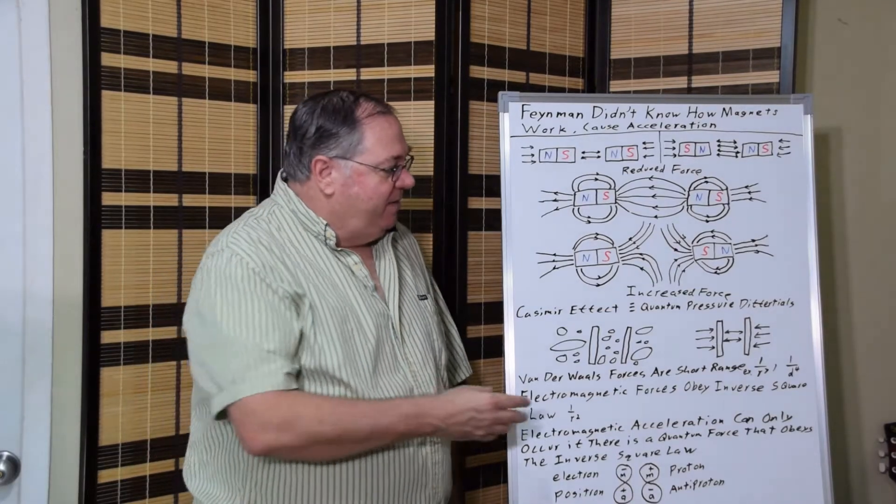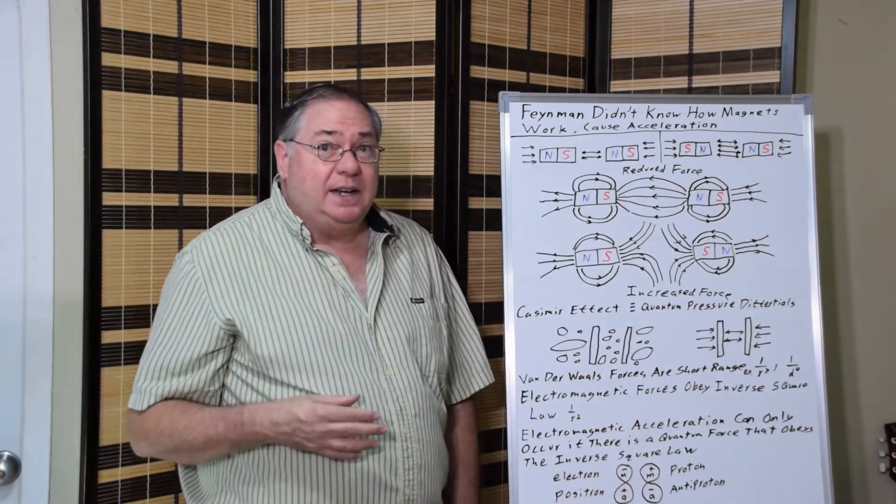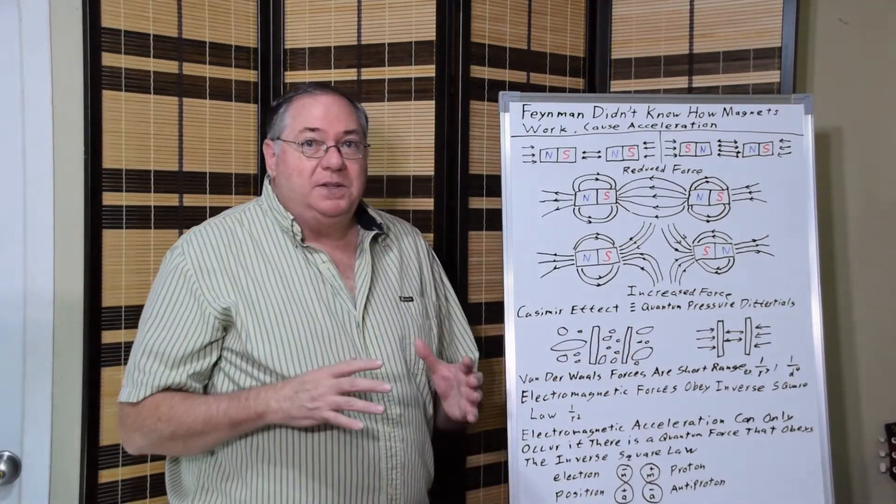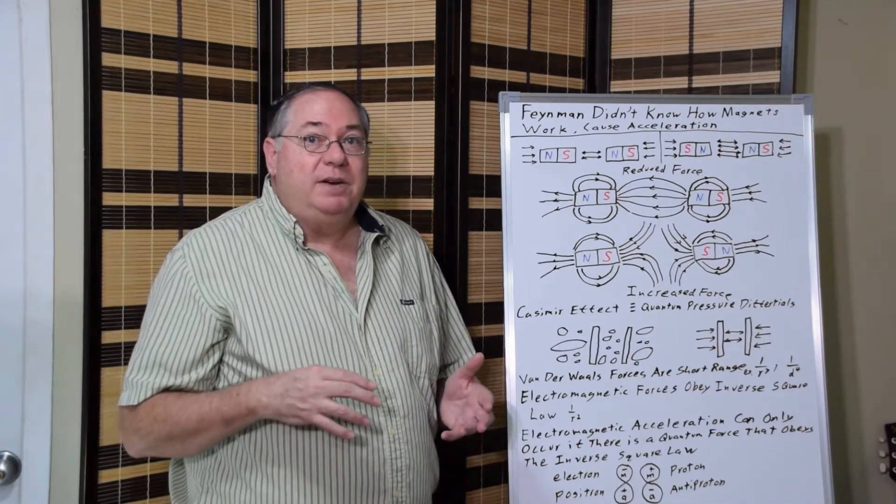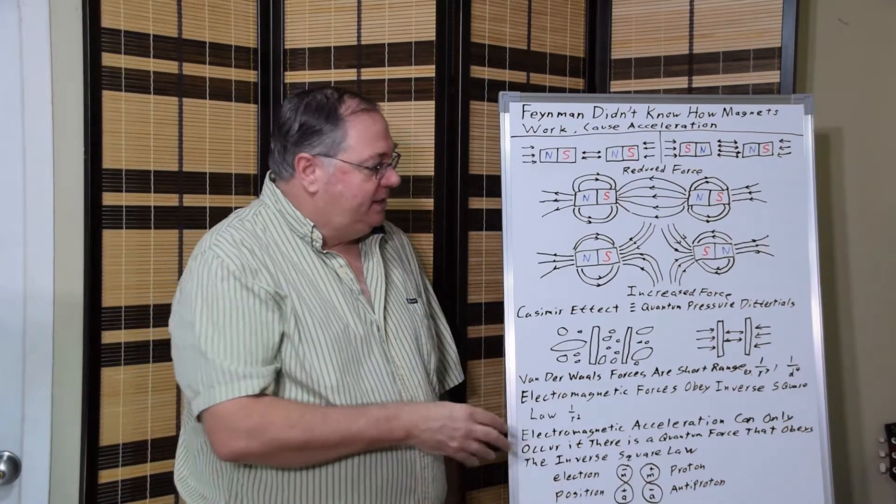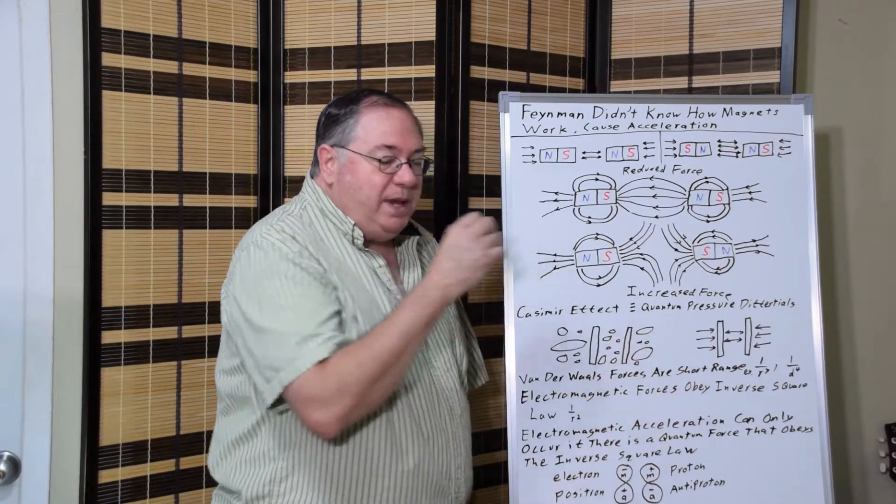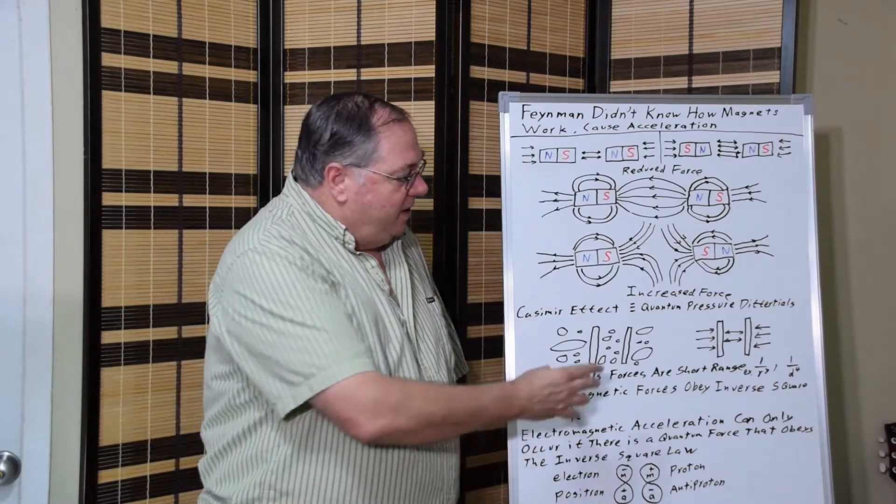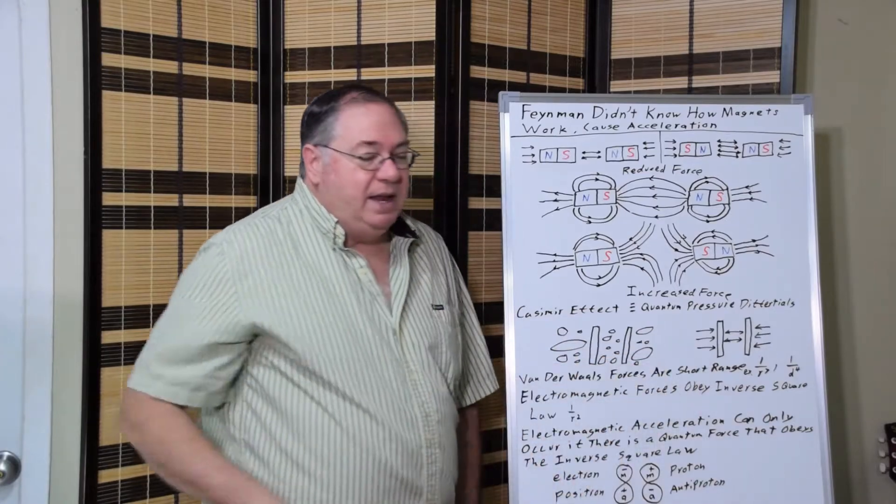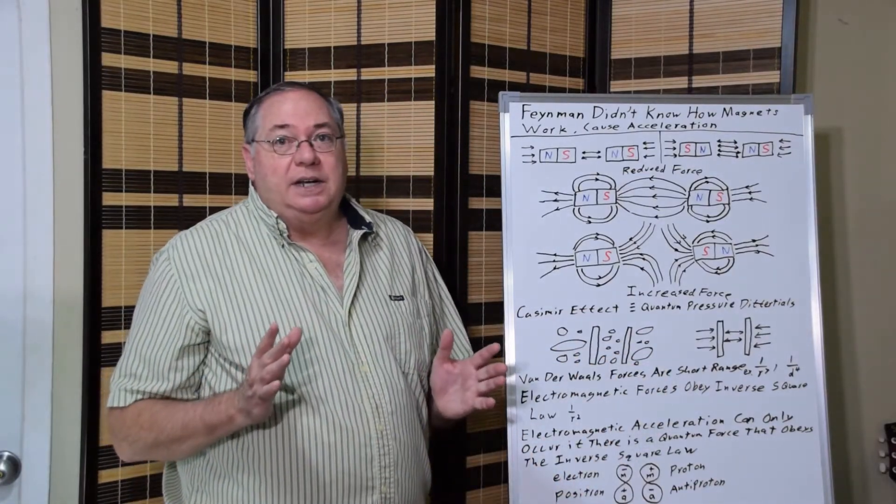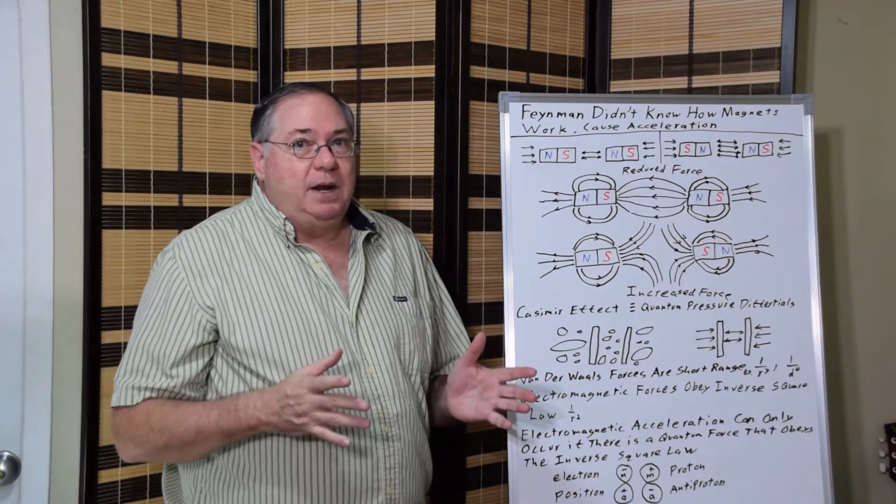With the Casimir effect, we have two plates. We have quantum fluctuations inside and outside. There are fewer inside because some quantum fluctuations are too big and some constructively interfere with themselves, so they can't exist in that space. And so, we end up with two plates being pushed together because of differentials in van der Waals pressure, as is illustrated here. We have less pressure pushing the plates apart than pushing them together. And this only happens at about one micron.